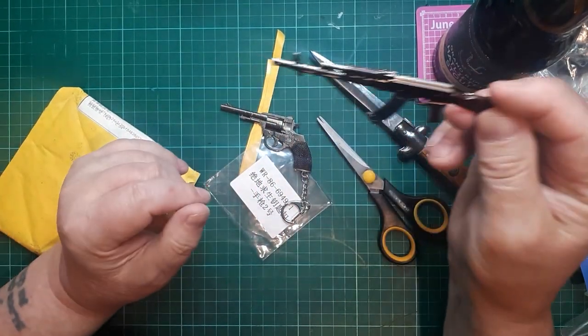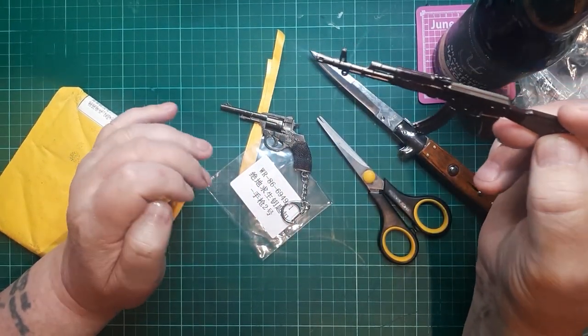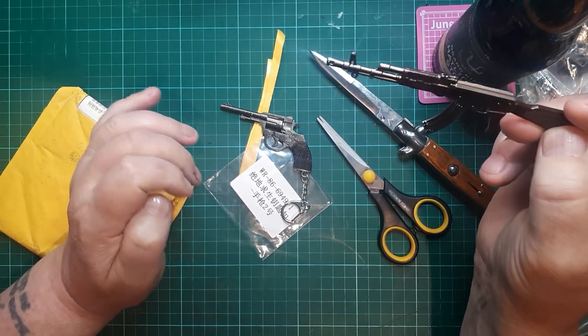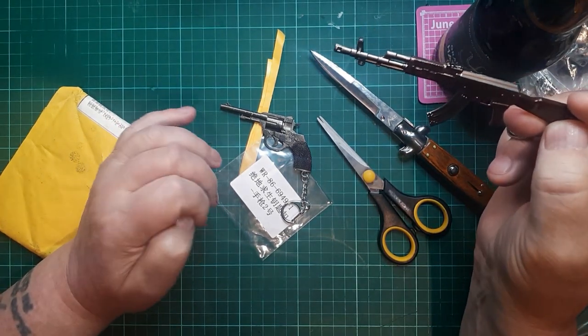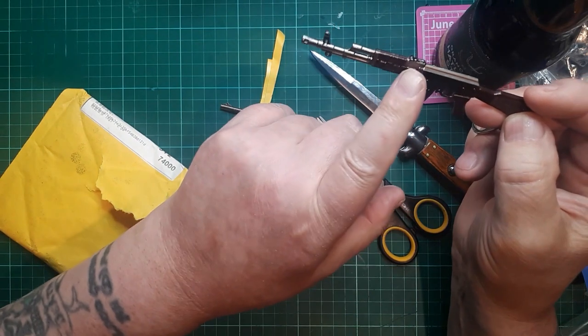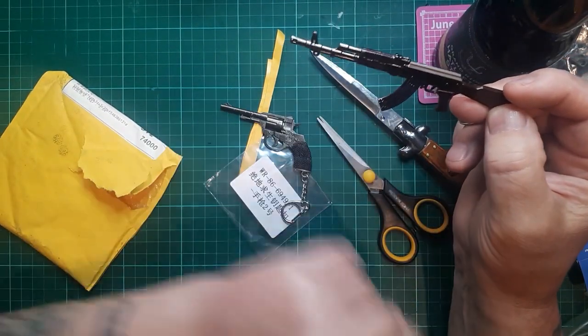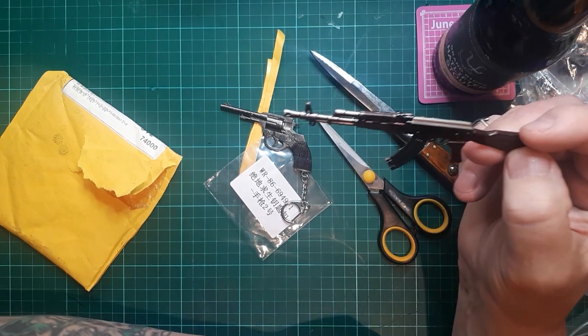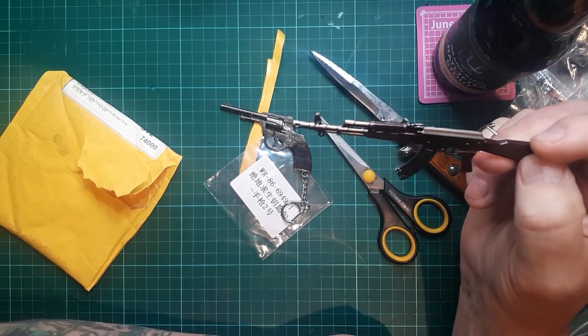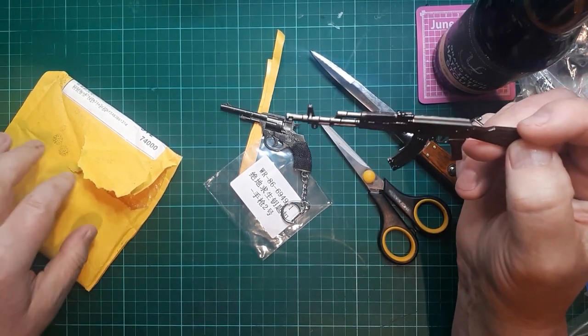Do you know, Australian customs are weird. I tried to get a cigarette lighter from, I think it was China, about a year ago. It would have been half this length. It looked similar to this, but it was a miniature cigarette lighter. It got confiscated as an illegal weapon. They are bizarre.